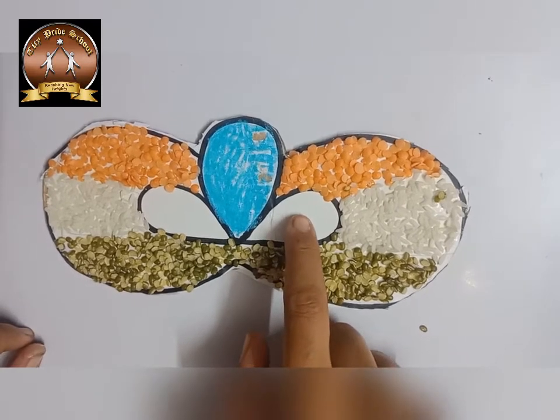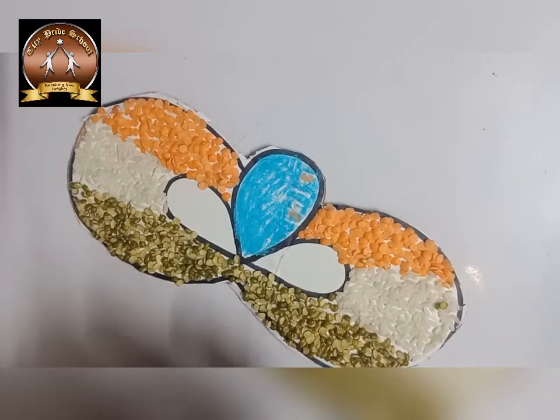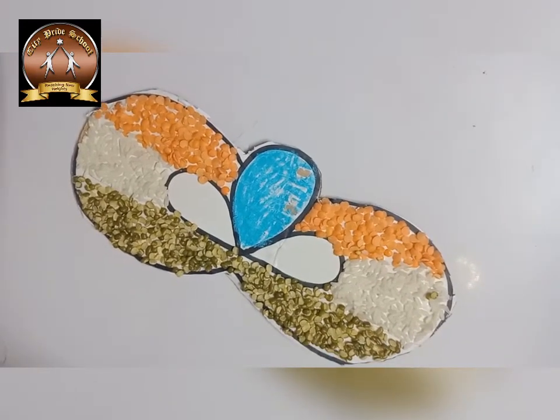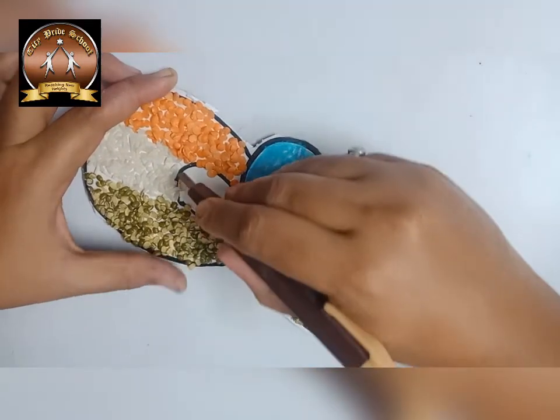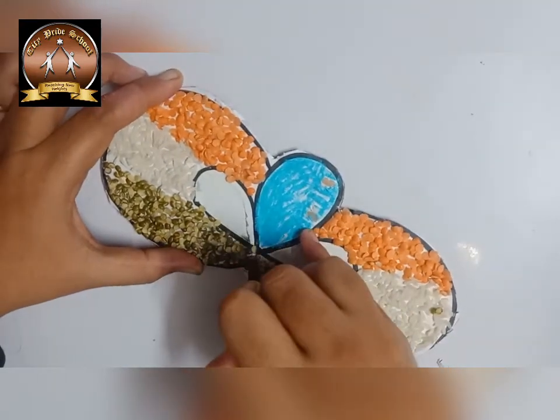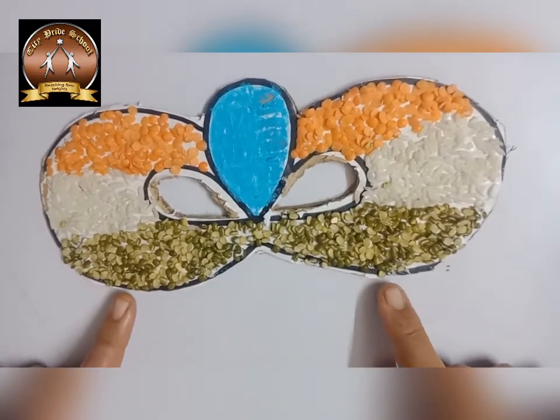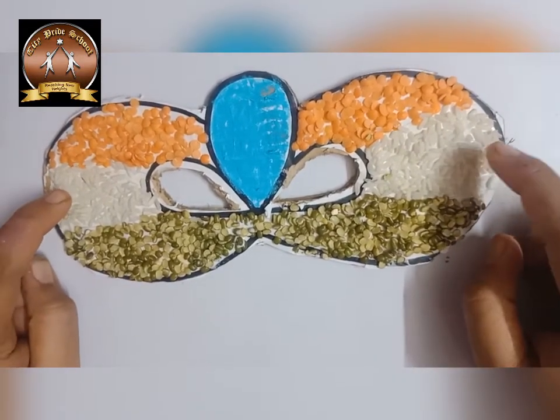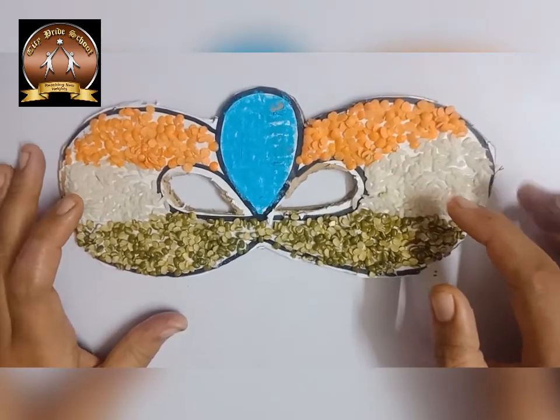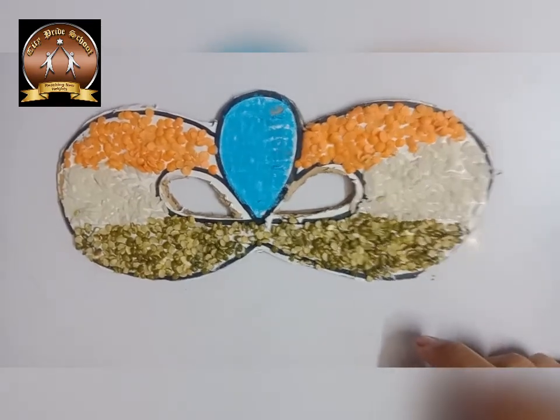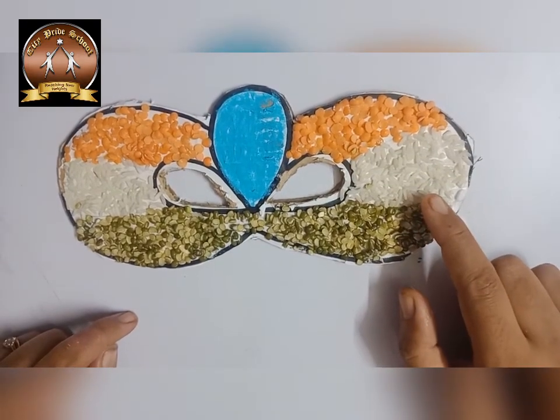So like this, how we have drawn the shape, first we have to mark it with the cutter and then we are going to cut it. Your mask is ready. Now, both sides of the white color, you have to make holes and you can tie ribbon. Even you can stick one wooden stick here at the left side and you can use it as a handy mask also.